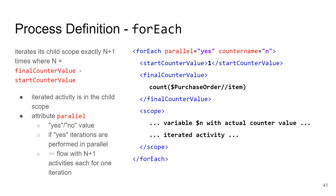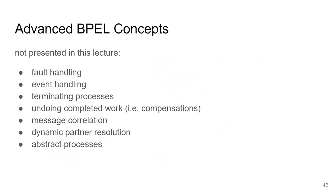That wraps up today's lecture. As with every technology, it's more important to play with it in the tutorial. BPEL is more complex than what we've covered — things not covered today include fault handling, event handling, terminating processes mid-execution, and compensations (undoing operations when a process terminates early, as support for transaction-like behavior).